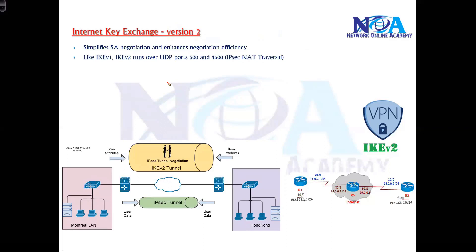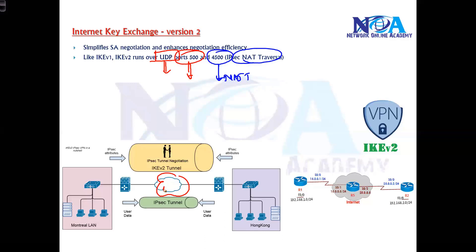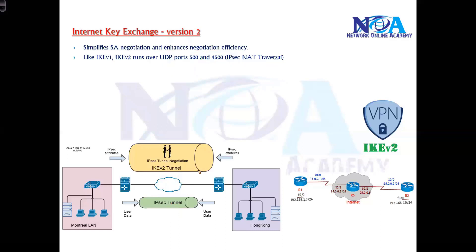IKEv2 runs over UDP, the same as IKEv1. It uses UDP port 500 by default, and switches to port 4500 if there is NAT traversal - that is, if there is any device performing address translation. These are the same default ports used by IKEv1.